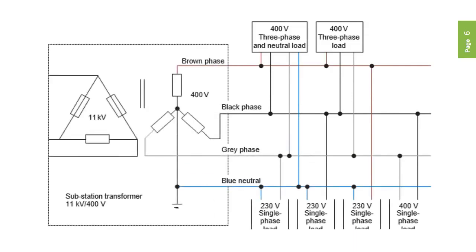This high voltage supply is then transformed down to 11,000 volts at substations as we reach the towns and cities, and then further down at local substations to give us our 400 volts AC three-phase system between each of the three line conductors: L1, L2 and L3.